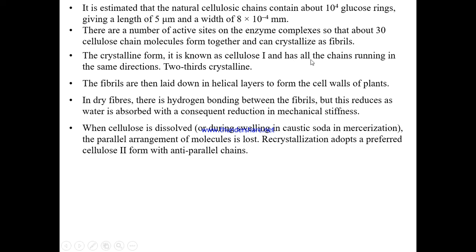The fibril is a crystalline unit of the cotton fiber containing 30 cellulose molecules. The crystalline form is known as cellulose I, with all chains running in the same direction — no folding, straight configuration. The fibrils are typically two-thirds crystalline, meaning about 70% of the fibril zone is crystalline. The fibrils are then laid down in helical layers to form the cell wall of the plant.